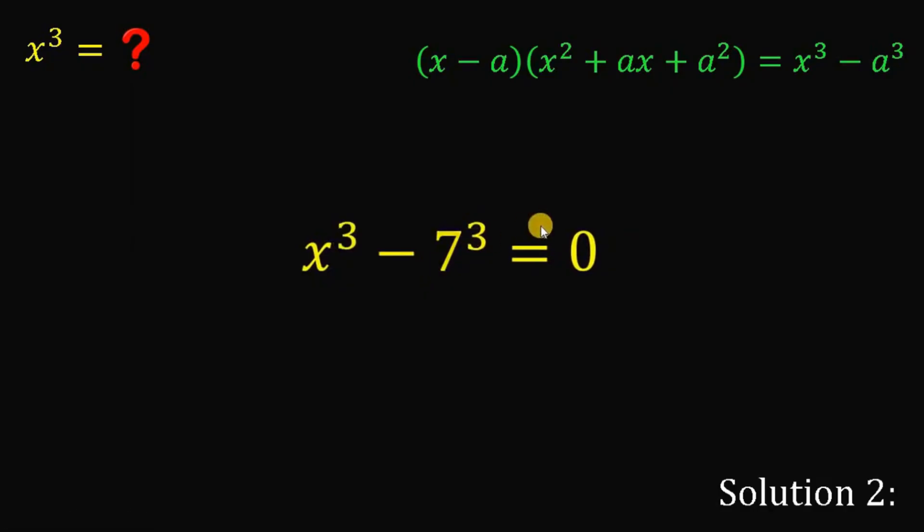And now, 7 cubed is just 343. Now, add 343 on both sides. Again, we get that the value of x cubed is just 343.